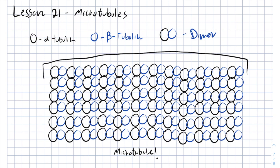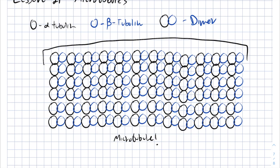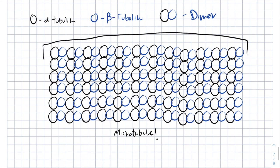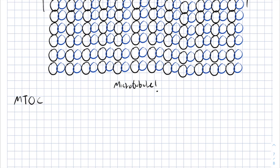Microtubules have many roles in the body. But let's first talk about where they come from. For the IMAT exam, there is a definition you have to be familiar with: MTOC, or the microtubule organizing center, is the source that microtubules mainly come from, or are organized from.